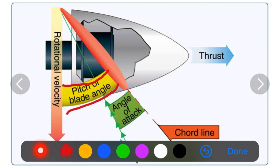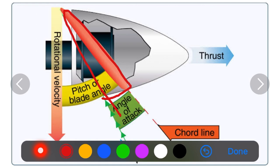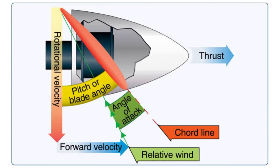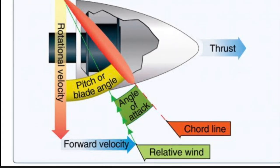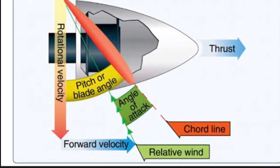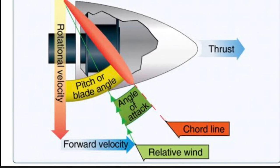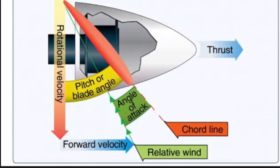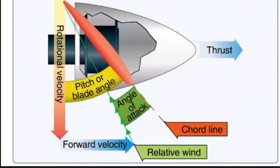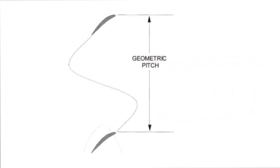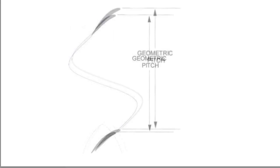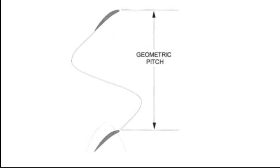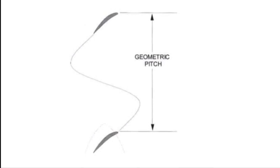The path of the propeller through the air determines the direction of the relative airflow. The angle between the blade chord and the relative airflow is the angle of attack. The angle of attack results from propeller rotational velocity (RPM) and aircraft forward velocity (true airspeed). An increase in RPM causes an increase in the angle of attack. The geometric pitch is the distance the propeller would travel forward in one complete revolution moving through air at the blade angle. Thank you and Jai Hind!